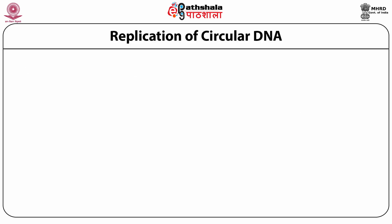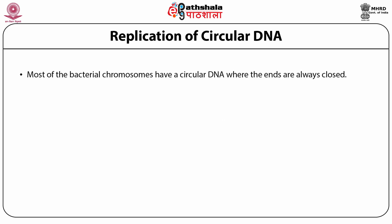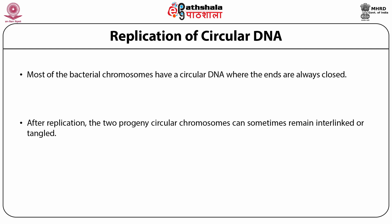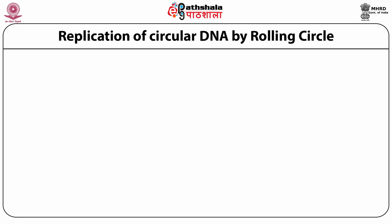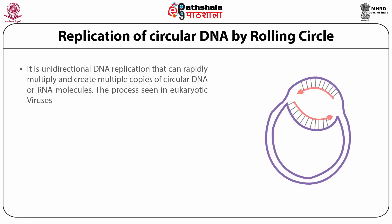How does replication of circular DNA take place? Most bacterial chromosomes have a circular DNA where the ends are always closed. After replication, the progeny circular chromosomes can sometimes remain interlinked or tangled and must be resolved so that each cell inherits one complete copy of the chromosome during cell division. Replication of circular DNA by rolling circle is a unidirectional DNA replication that can rapidly multiply and create multiple copies of circular DNA or RNA molecules.